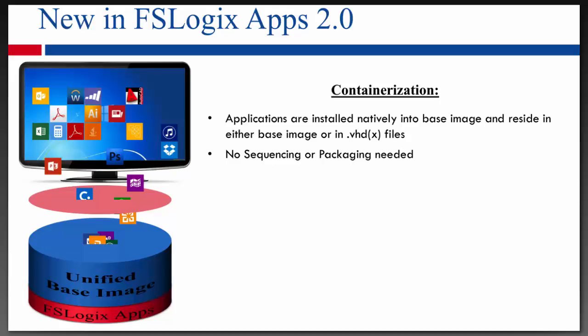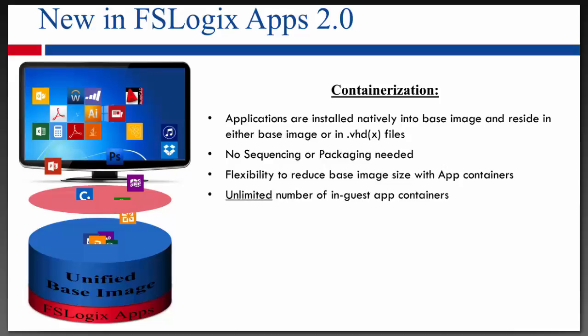It's a normal install like you would do on Windows. We can reduce the size of the base image with our app containers by offloading the application installs to those VHD or VHDX files. A big use case is HP Moonshot — early on with the limits of hard drive space, installing all the applications into the base image was not feasible. So we have app containers to offload to those VHD or VHDX files. We're mounting these VHD or VHDX files at the OS level, so we have no limits on the actual number you can mount — it's only limited by what the OS can mount.